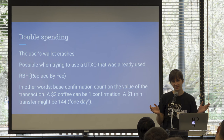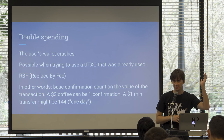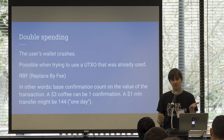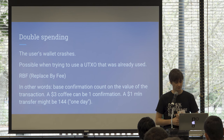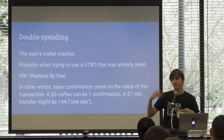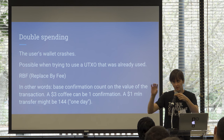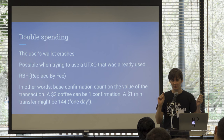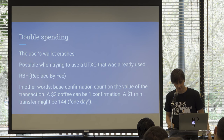Another double spend scenario — this time unintentional: the user's wallet crashes. You used your wallet to send money and it immediately crashes, but the transaction goes out to the network. When you restart the wallet, it thinks the UTXO is still unspent, because the spend wasn't recorded locally. The wallet tries to send money again using the same UTXO, which has already been spent. If the first transaction is still in the mempool, both are technically valid but one is double-spending the other. This is unintentional, but possible.